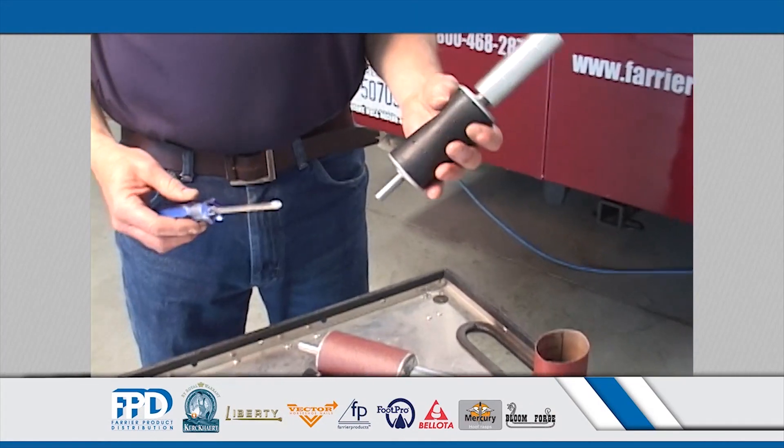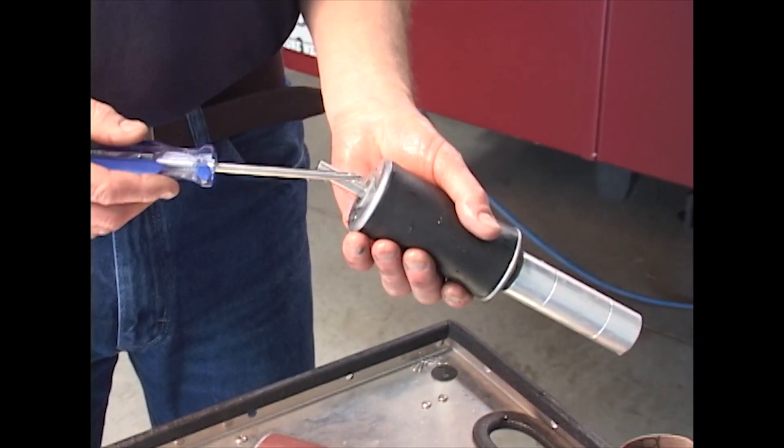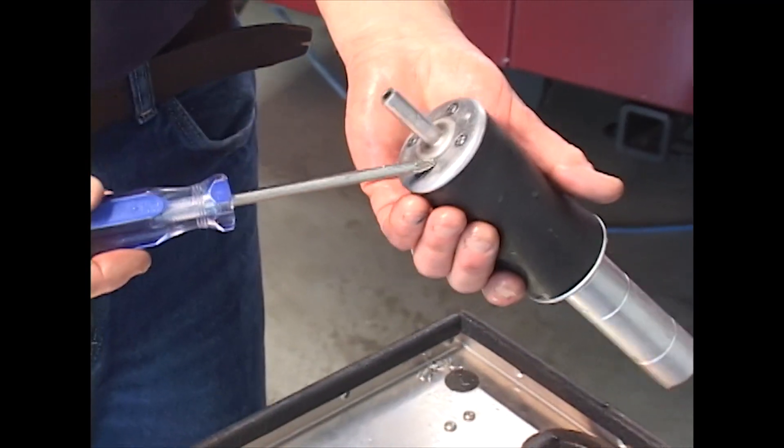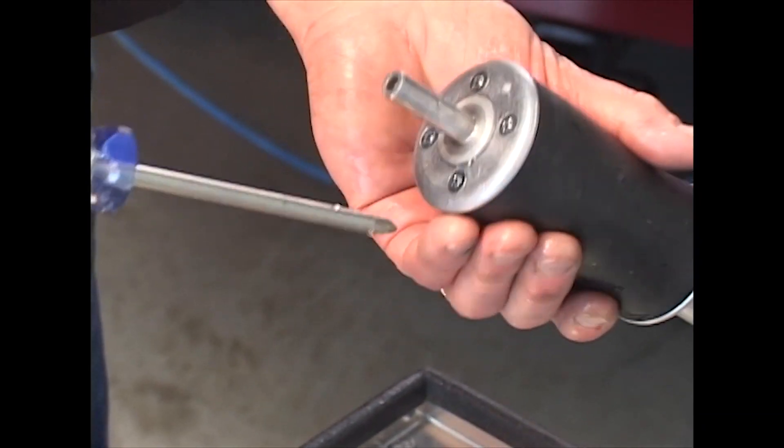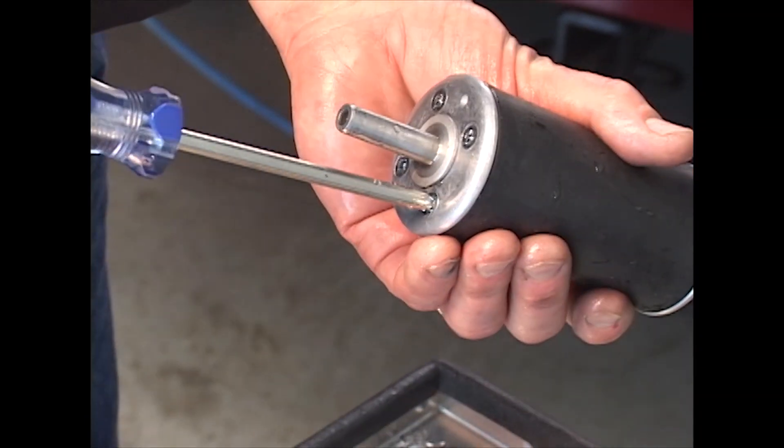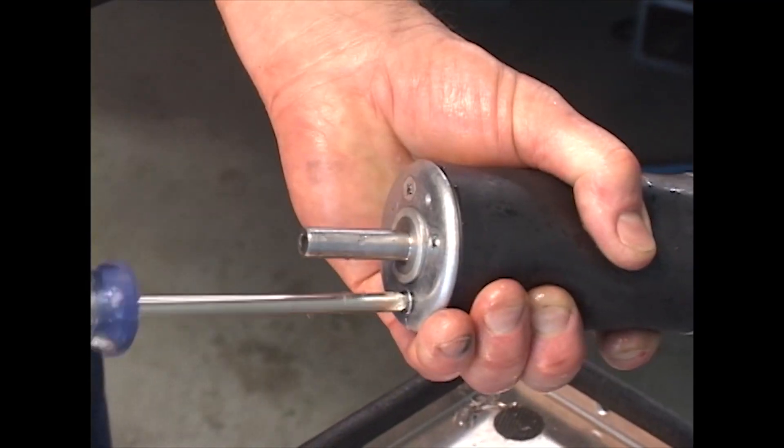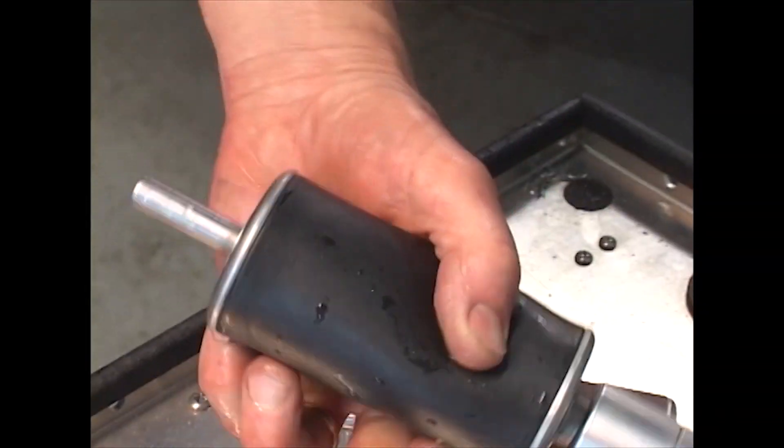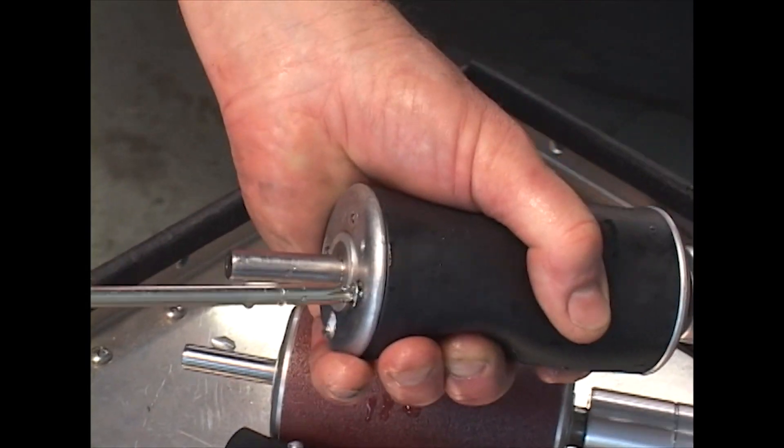If you need to replace the bladder, all you need is a new bladder and a Phillips screwdriver. Make sure the screwdriver is the appropriate size for the bolts, otherwise you will strip the heads of the bolts. We're going to remove eight bolts, four on each side of the hoof buffer.